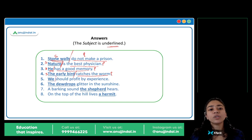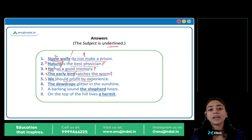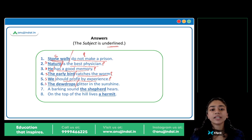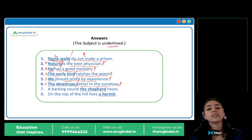'We should profit by experience' — 'we' is the subject, 'should profit by experience' is the predicate. 'The dew drops glitter in the sunshine' — 'the dew drops' is the subject, 'glitter in the sunshine' is the predicate. What do the dew drops do? They glitter in the sunshine.